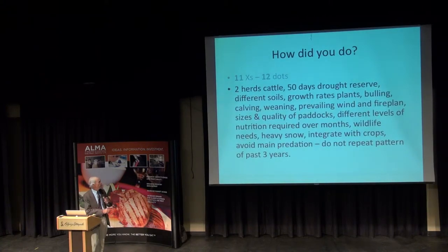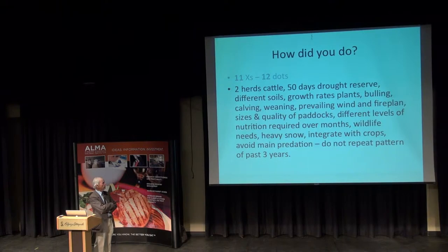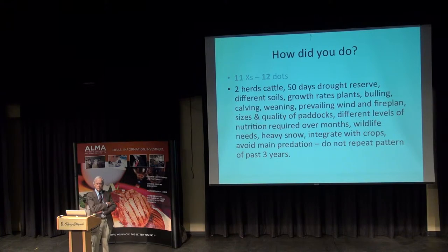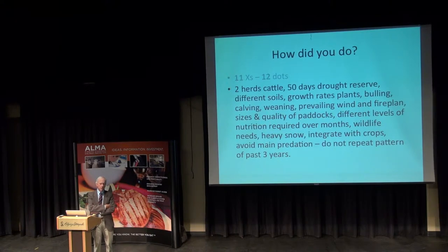Now what about on the farm? Let's say you have two herds of cattle. You want 50 days of drought reserve. You have different soils, different growth rates on the plants. You've got bullying, calving, weaning to worry about at different times. Prevailing wind and fire plan, different sizes and quality of all the paddocks, different levels of nutrition required over the months. Wildlife needs, heavy snow — and you must integrate it with crops and avoid main predation areas, and must not repeat the same pattern two years running. How many of you could do that with a calendar, a notebook, mob grazing, rotational grazing, cell grazing, short duration grazing — whatever you like? Why do you keep trying to do it then?